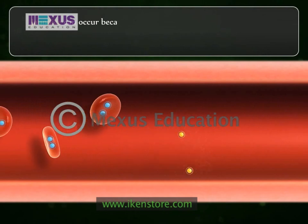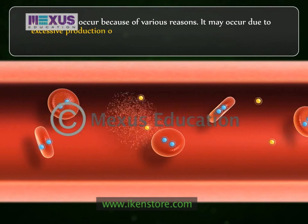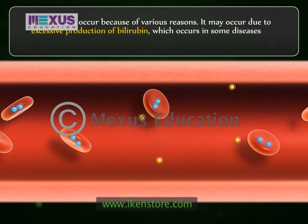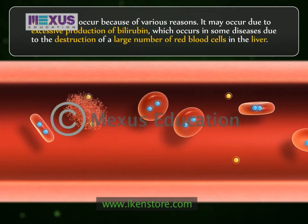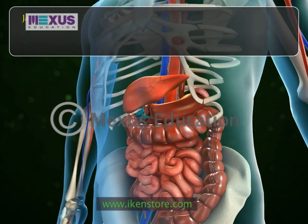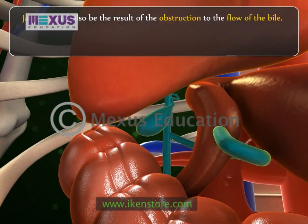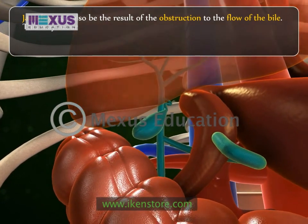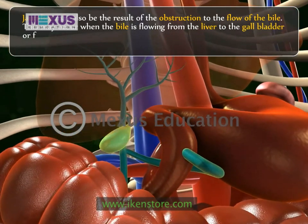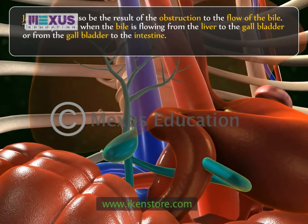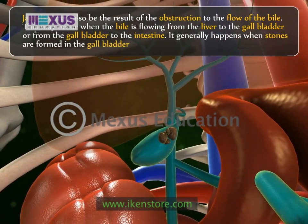Jaundice can occur because of various reasons. It may occur due to excessive production of bilirubin, which occurs in some diseases due to the destruction of a large number of red blood cells in the liver. Jaundice may also be the result of obstruction to the flow of bile — this may occur when bile flows from the liver to the gallbladder or from the gallbladder to the intestine, and generally happens when stones are formed in the gallbladder.